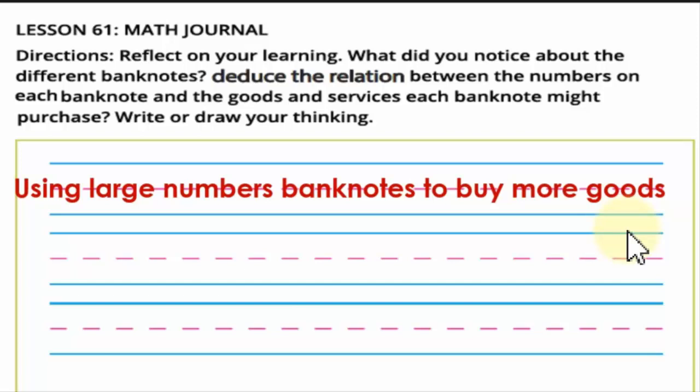Now we will make a reflection on our learning. What did you notice about the different banknotes? You can write or draw what you're thinking about. Students might say: we use large-denomination banknotes to buy more goods. If I want to buy a doll, a toy, and a pencil, I need a large number of banknotes. But if I only want to buy a pencil or notebook, maybe 10 pounds is enough.